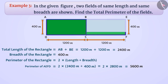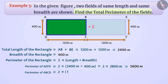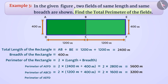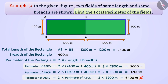Both fields are the same shape. If we find the perimeter of rectangle ABCD and then double it, can we find the total perimeter of both fields? Let's try. The perimeter of rectangle ABCD is 2 into 1200 meter plus 400 meter, equal to 2 into 1600 meter, equal to 3200 meter. So the perimeter of rectangle AEFD would seem to be 2 into 3200 meter, equal to 6400 meter — but this is not correct.